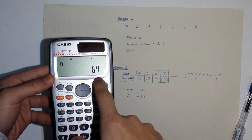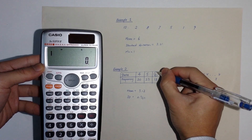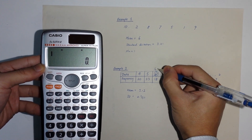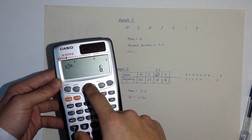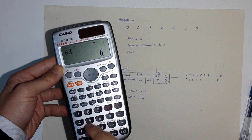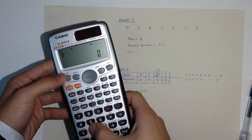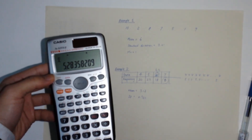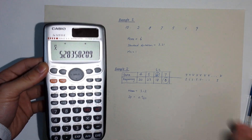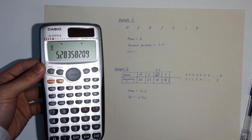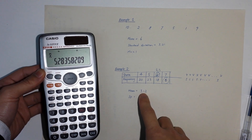After changing the frequency, check with Shift 1 3 — n is now 67 instead of 66. You can also correct a data value, for example changing 6 to 6.5 using the same arrow navigation method, then pressing EXE. You can verify the mean has changed. If you're not confident, you can always clear the stats and start from the beginning. That is how to use the calculator for finding statistical figures.